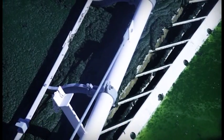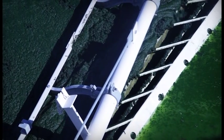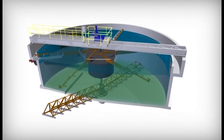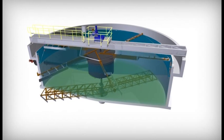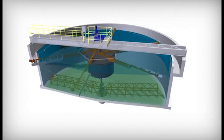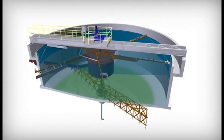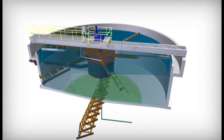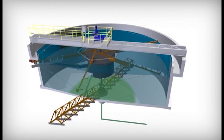Floating solids are skimmed into a float box by skimmer arms. Any settled solids are scraped along the tank bottom by sludge scrapers for removal from the DAF sludge hopper. Clarified effluent exits the tank under a float retention baffle and into an effluent chamber or launder.